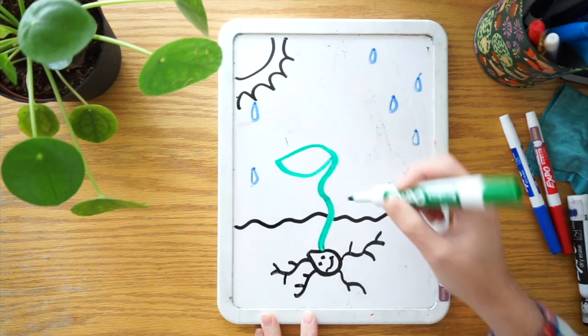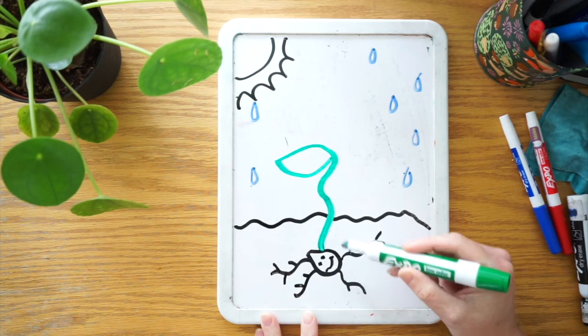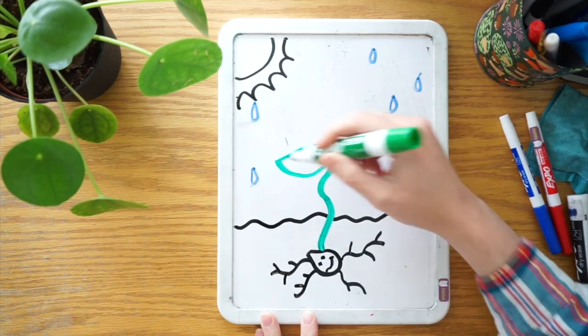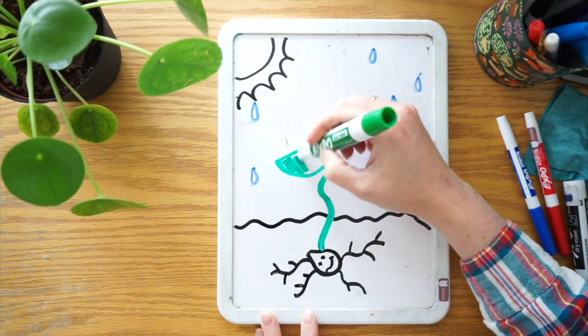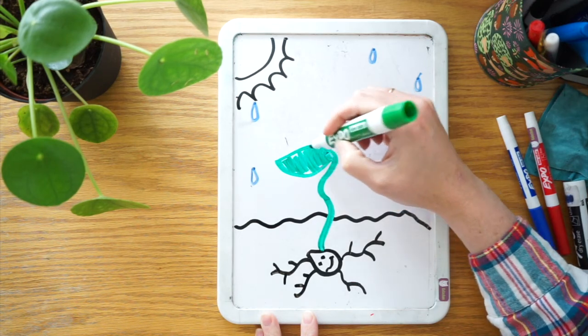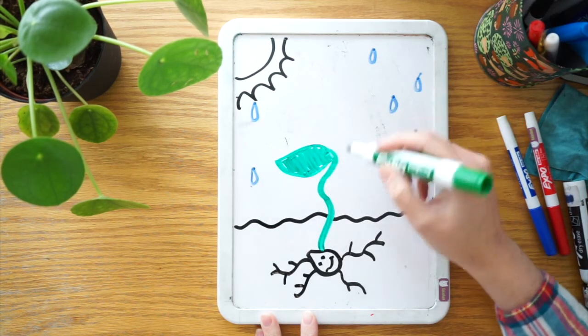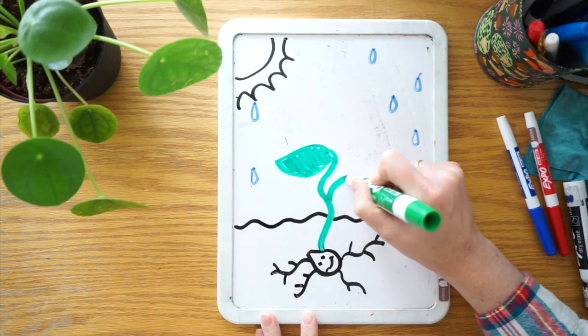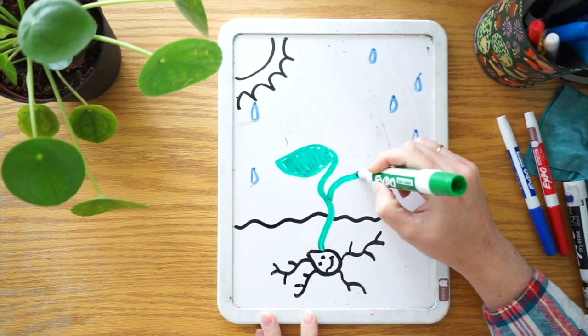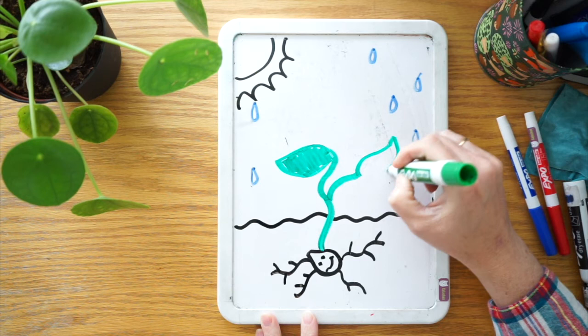And do you notice something about the shape of the seed and the shape of the leaf? They're the same shape. And maybe another sprout comes off of that. And another leaf grows.